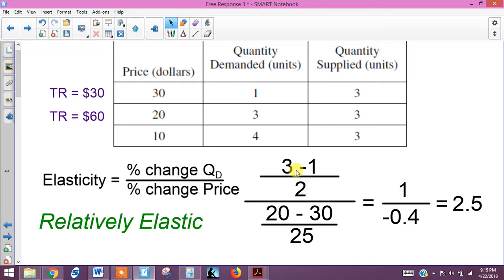So 3 minus 1 over the average of these two divided by where we ended up in price minus where we started in price, divided by the average, and then compute that, and you end up with negative 2.5. But we typically express the price elasticity of demand in absolute value, so we end up with 2.5.